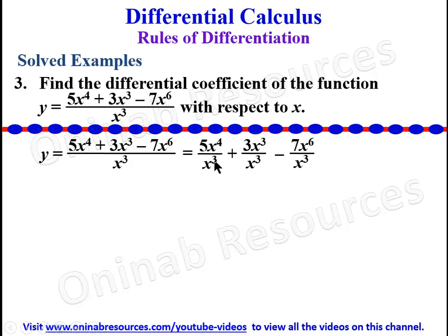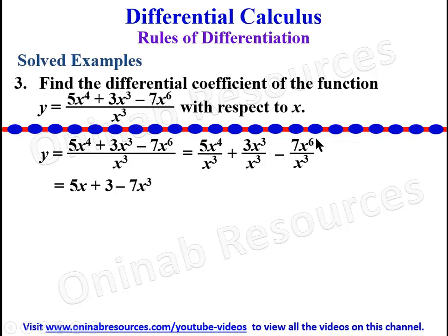We simplify further: x^3 cancels x^3 leaving 5x; x^3 cancels x^3 leaving 3; and 7x^6 divided by x^3 gives 7x^3. So the simplified function is 5x + 3 − 7x^3, which we can now easily differentiate.